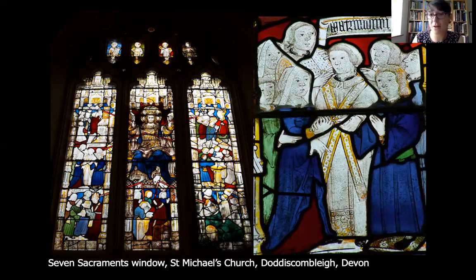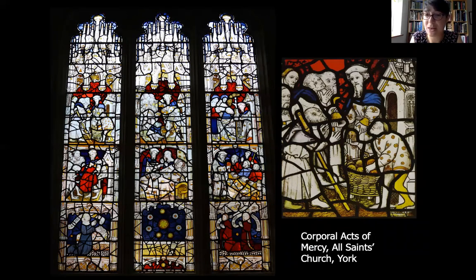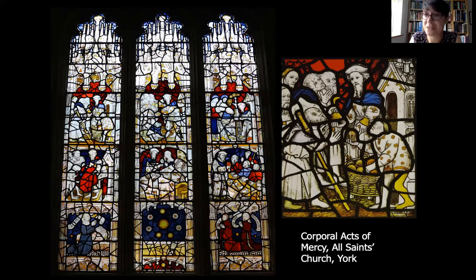Windows were also there for moral instruction - how to act. This representation of the six Corporal Acts of Mercy shows charitable acts being made by, interestingly, the same figure in each panel. In the detail he's a figure with a hat and a red and blue cloak, giving bread from a basket to a figure with a big beard. He may well be the donor who paid for this window - Nicholas Blackburn, who was Mayor of the City of York at the time. This 15th century window shows how to be charitable, but because he appears in every single scene doing the acts it's also a celebration of him as a person.